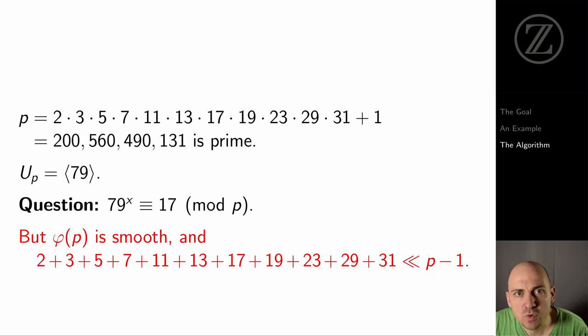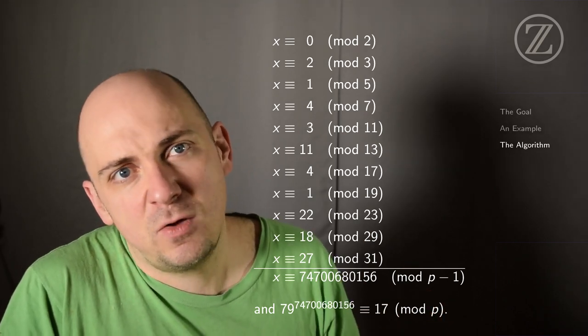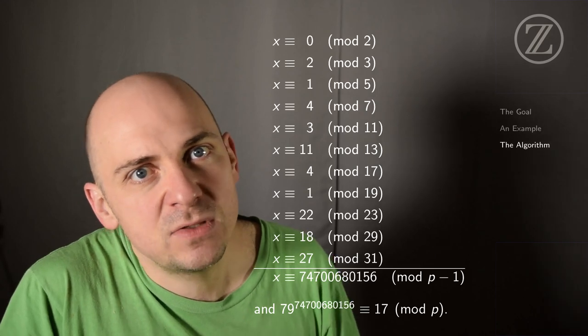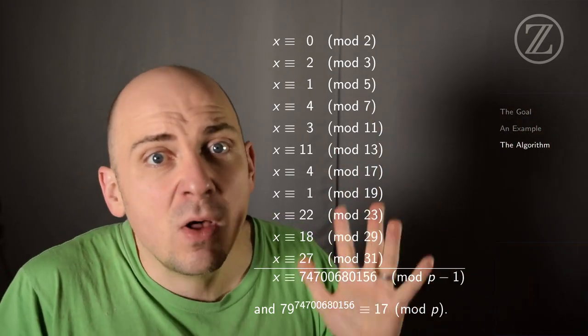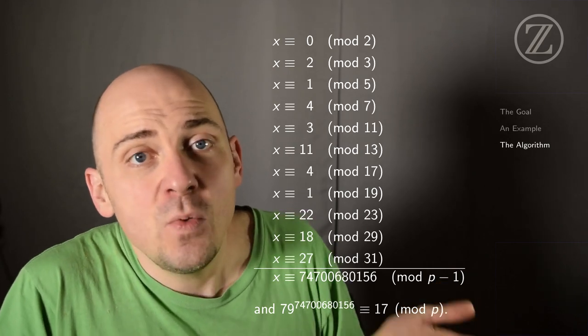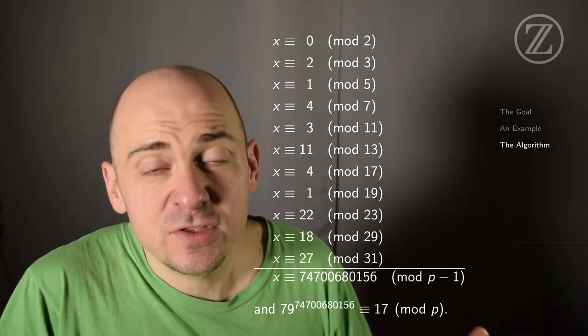But now we can use the preceding algorithm to massively speed up the search. This number, p minus one, is a smooth integer, right? Its prime factors are much, much smaller than p minus one. The sum of the prime factors is much, much smaller than p minus one. And what are we going to do to search for that number x? Well, we're going to figure out what x is modulo 2, 3, 5, 7, 11, 13, and so on. So we only have to check relatively few things in order to find x. Remember what our goal was? Our goal was to find an x so that 79 to the x power is 17 modulo p. But p is an enormous number, and I don't want to try all the possible values of x. So instead, we determine what x is modulo 2, 3, 5, 7, and so on. And then we glue together all of these congruences to eventually find a choice of x that works. We can set x equal to 74,700,680,156. And we've solved the discrete log problem.